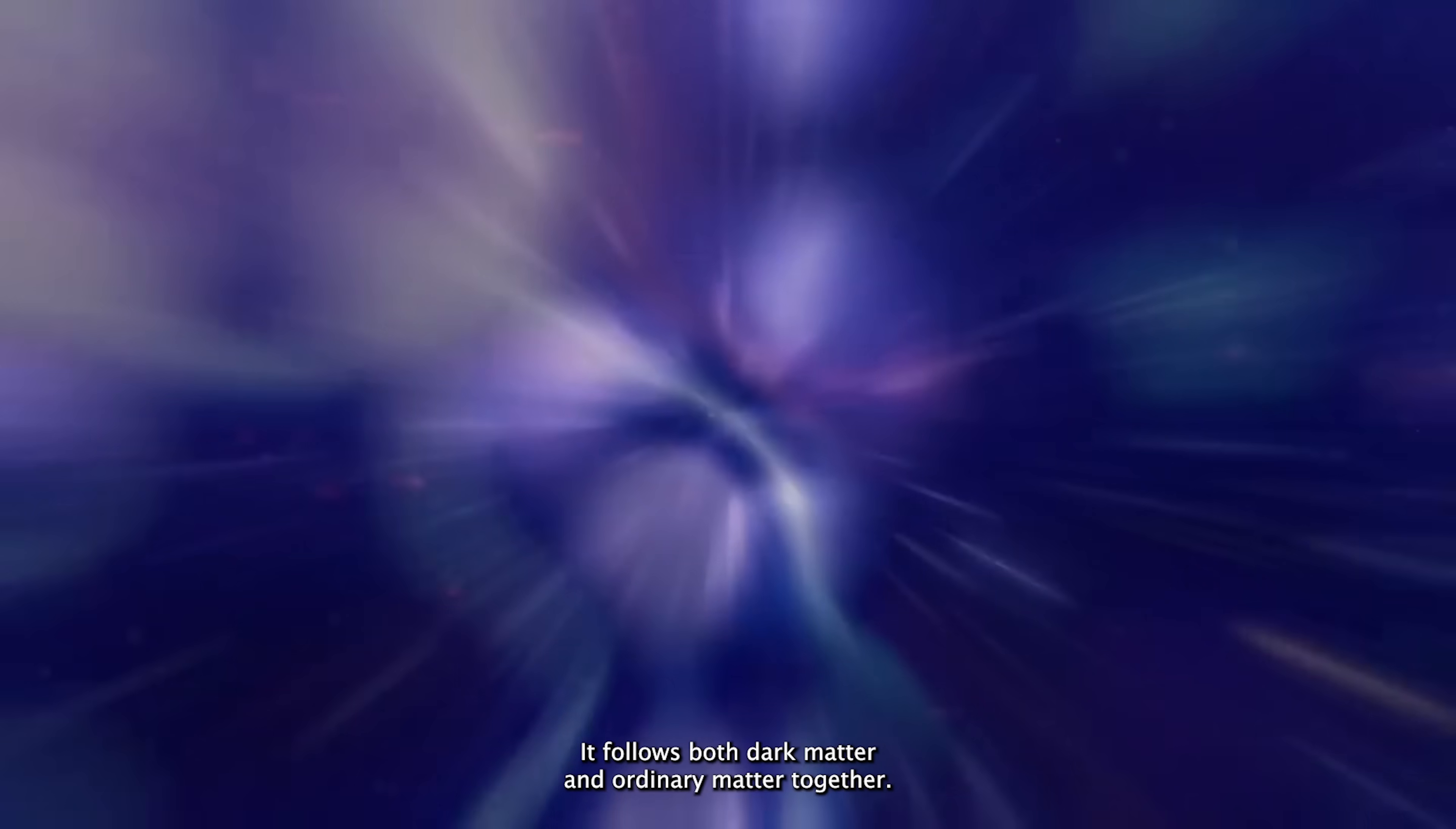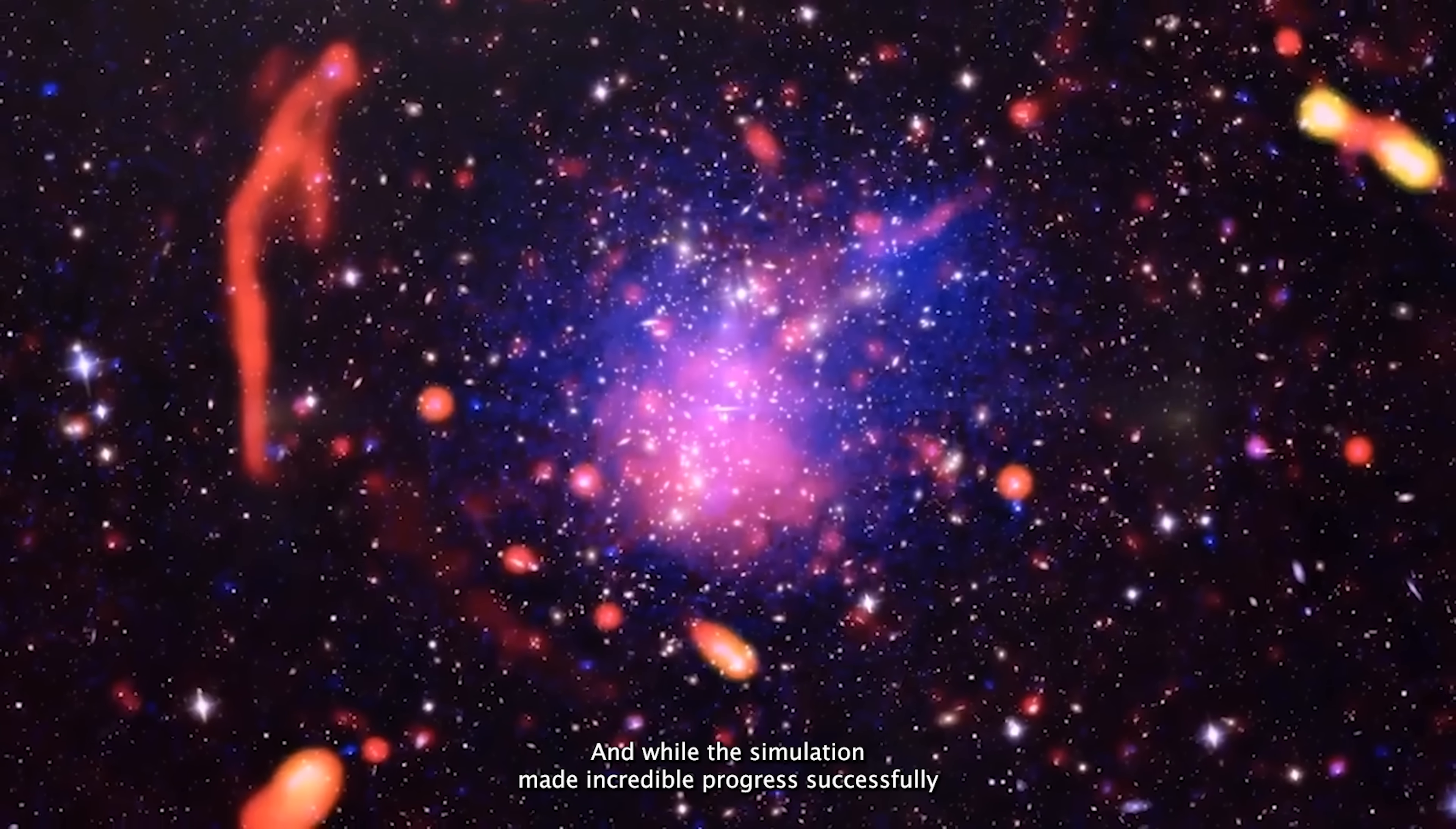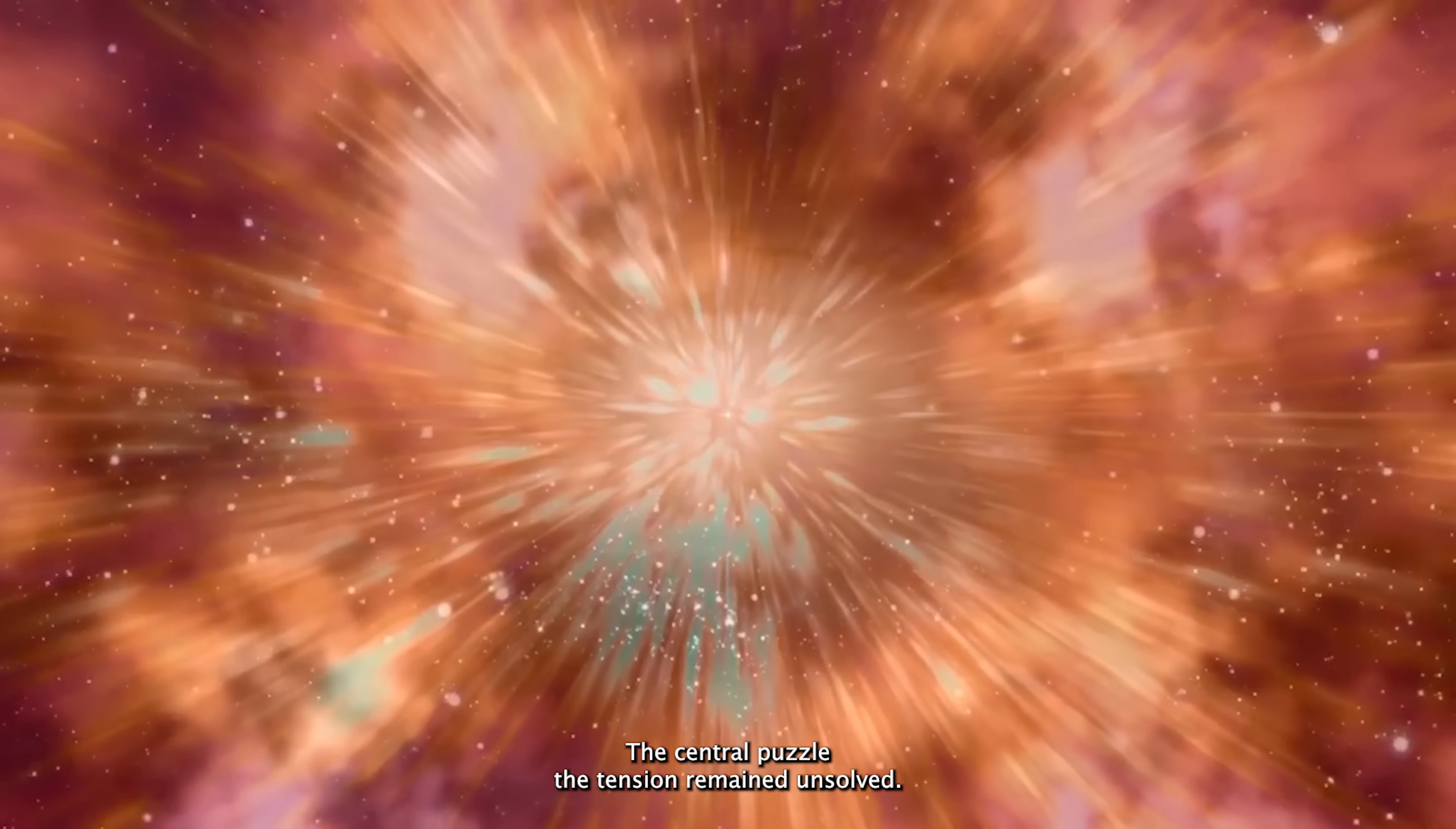It follows both dark matter and ordinary matter together, acknowledging that even though dark matter rules gravity, baryons leave fingerprints all over cosmic structure. And while the simulation made incredible progress, successfully replicating galaxies like the Milky Way and Andromeda with impressive accuracy, it still couldn't explain why matter today seems to be less clumpy than expected. The central puzzle, the S8 tension, remained unsolved.